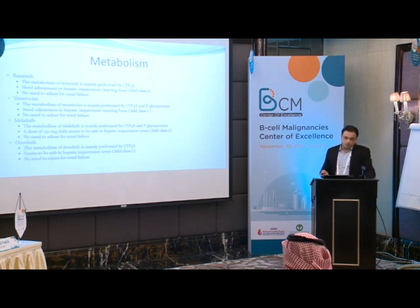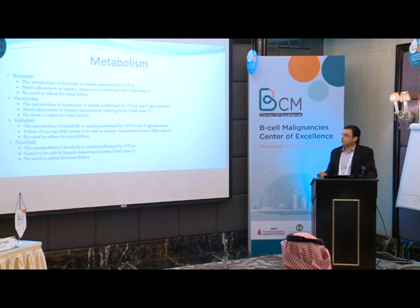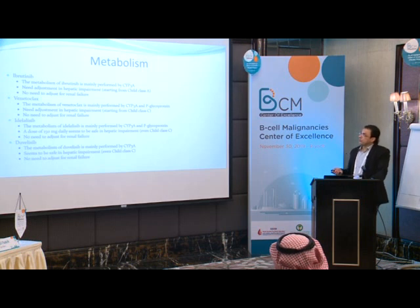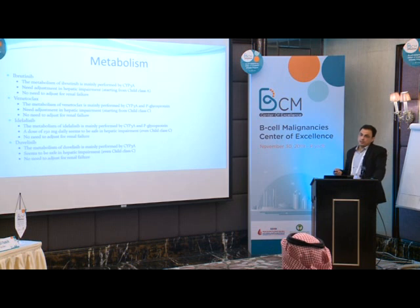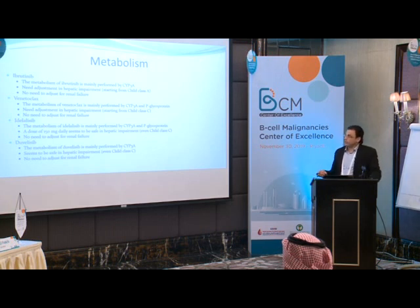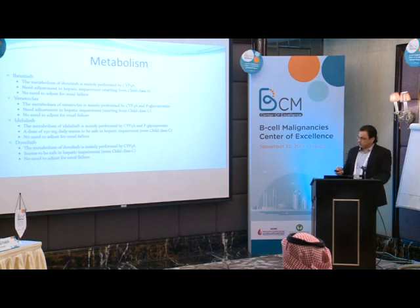Drug metabolism can sometimes guide selection. All four agents are safe in renal failure, so that doesn't help prioritize. However, liver dysfunction does matter. Ibrutinib needs adjustment starting from Child-Pugh class A liver cirrhosis, compared to Child-Pugh class C for venetoclax — so venetoclax is more tolerable in patients with liver dysfunction. Surprisingly, PI3-kinase inhibitors are also safe in patients with some liver dysfunction up to Child-Pugh class C, despite transaminitis being one of their major side effects.